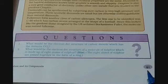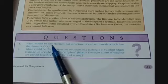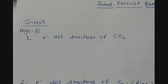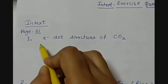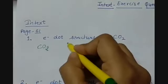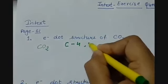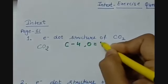At page number 61, the first in-text question is: what would be the electron dot structure of carbon dioxide, which has the formula CO2? The solution will be that, as we have been given the formula CO2, carbon is having a valency of 4 and oxygen is having a valency of 6.